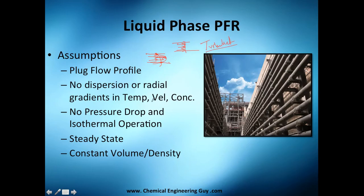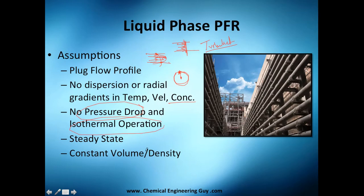We have no dispersion or radial gradient, so temperature doesn't change whether you're at the center or near the wall, and the velocity doesn't depend on the radius, nor does the concentration. There's no pressure drop, isothermal operation, and it's steady state since it's a continuous reactor. We also have constant volume or density — that's the main difference compared to the gas phase PFR.